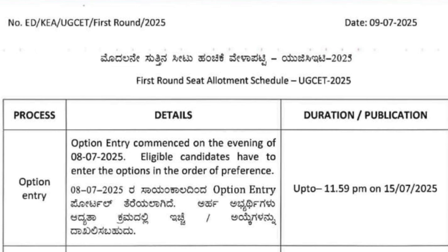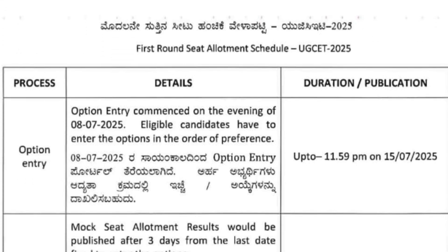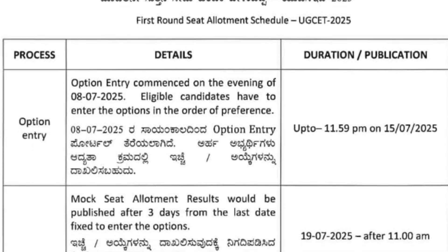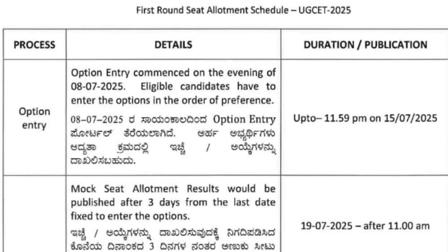Let's quickly understand what happens after option entry. Once you lock in your choices for engineering or MBBS courses through KCET or NEET counseling, the seat allotment process begins. Many students think they are done once they submit their options, but that's just the beginning of the final admission phase.